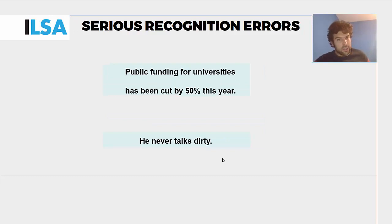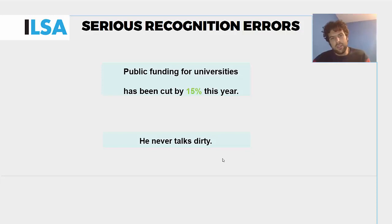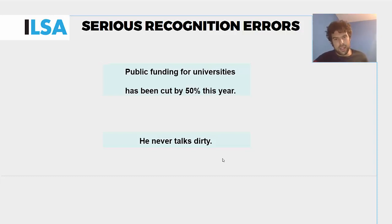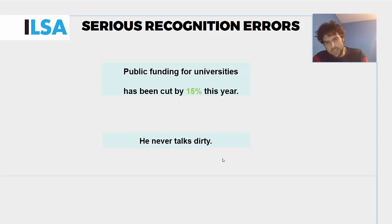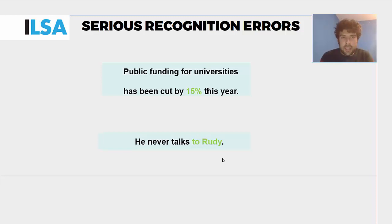Serious recognition errors, in contrast, are not detected as errors — they are not seen as such. For example, 'Public funding for universities has been cut by 50% this year' — most viewers without access to the audio would not know that's an error, because the actual audio said 15%. These are called serious recognition errors, or lies, because they misinform viewers, who will often have no chance to know what they read was wrong. Similarly, 'he never talks to dirty' instead of 'he never talks to Rudy' — unless context makes it clearer, there is no way of knowing there was a mistake. That's what a viewer would call a lie, and it's penalized as minus 1.